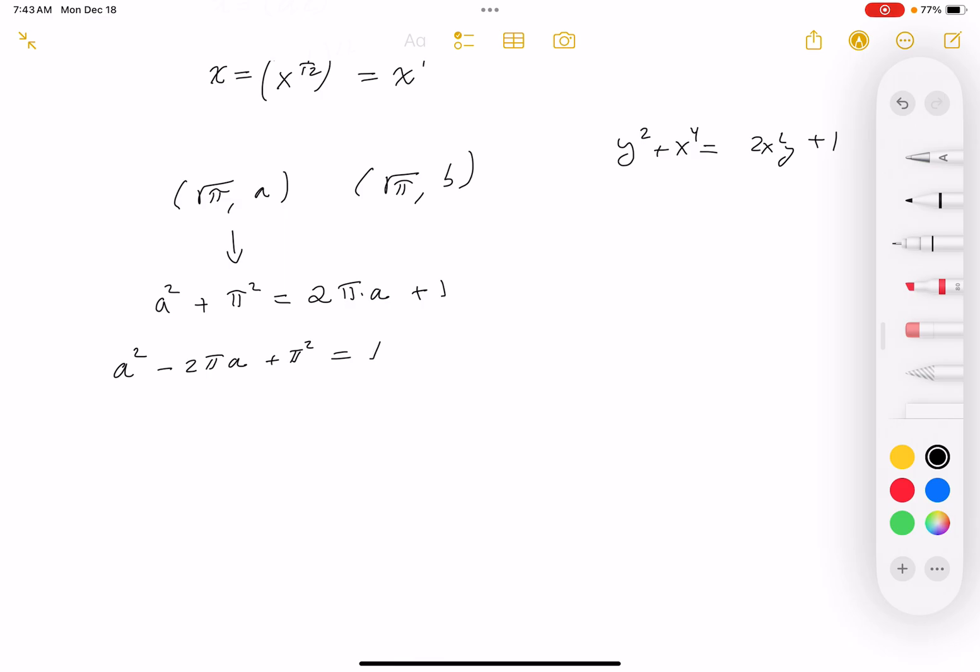Then I could write (a - π)² would equal 1. Then I could use square root rule: a - π equals plus or minus 1, so I could say a equals π plus or minus 1.